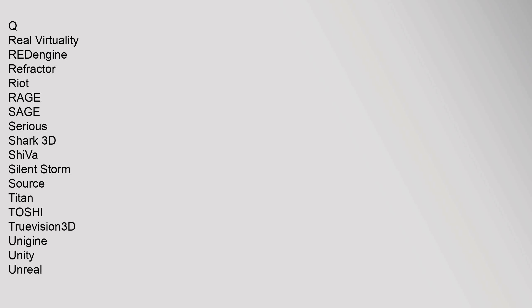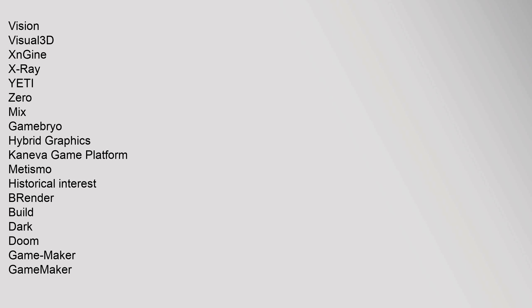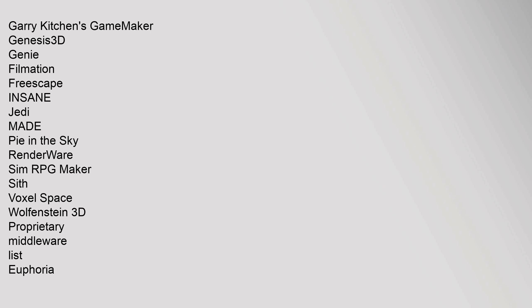Proprietary 3D engines include: 4A Engine, Amazon Lumberyard, Anvil, Bork3D, C4, Chrome, Clausewitz Engine, Creation Engine, CryEngine, Crystal Tools, Diesel, Dunia, EAgl, Ego, L.Flight, Inferno, Essence, Flare3D, Fox, Frostbite, GeoMod, GoldSrc, Hero Engine, HydroEngine, HPL 2 and 3, id Tech 5 and 6, Ignite, IW, Jade, Kinetica, LS3D, LithTech, Luminous Studio, Marmalade, Mizuchi, Mt. Framework, Outerra, PantaRay, PhyreEngine, RealVirtuality, RED Engine, Refractor, Riot, Sage, Serious, Shark3D, ShiVa, Source, Titan, Toshi, TrueVision3D, Unigine, Unity, Unreal, Vision, Visual3D, XNJine, X-Ray, Yeti, Zero, Gamebryo. Also listed: Kaneva Game Platform, Metismo, and historical engines: Brender, Build, Dark, Doom, Game Maker, GameMaker, Genesis3D, Genie, Filmation, Freescape, Insane, Jedi, MADE, Pie in the Sky, RenderWare, Sim, RPG Maker, Sith, Voxel Space, Wolfenstein 3D, and proprietary middleware such as Euphoria, Gameware, GameWorks, Havok, iMUSE, Kinapse, QuasiL, SpeedTree, Zaitman, and FaceGen.